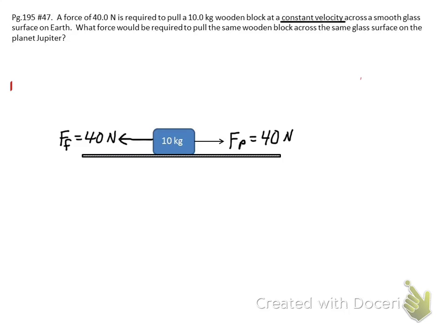Continuing on my free body diagram, I know this force of friction is going to be mu times force normal. Force normal is this vector perpendicular to the surface. I know force of friction has to be 40 Newtons. What does force normal have to be?